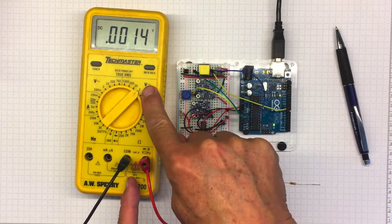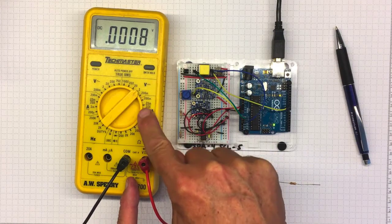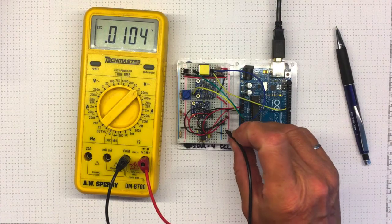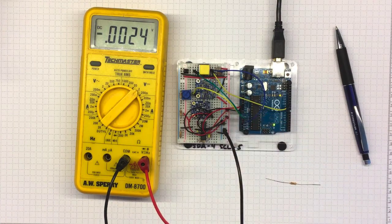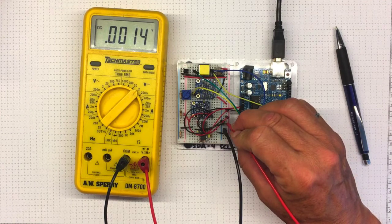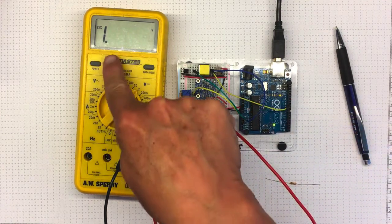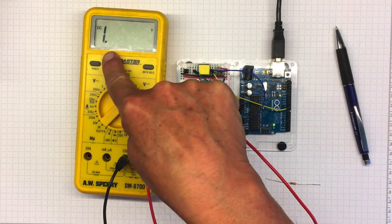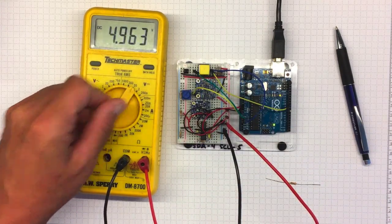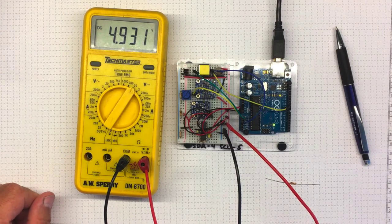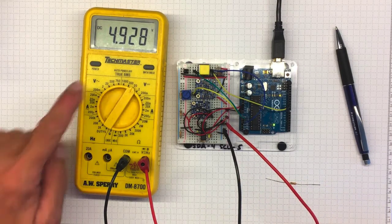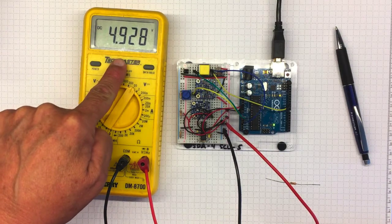We can also measure DC voltage. Now right now I've got it set on the 2 volt range. If I plug the black lead into ground and plug the red lead into the red side there, I get this indication saying I'm up past the measurable voltage range. So if I switch up to 20, I find the voltage on my Arduino is about 4.93 volts.